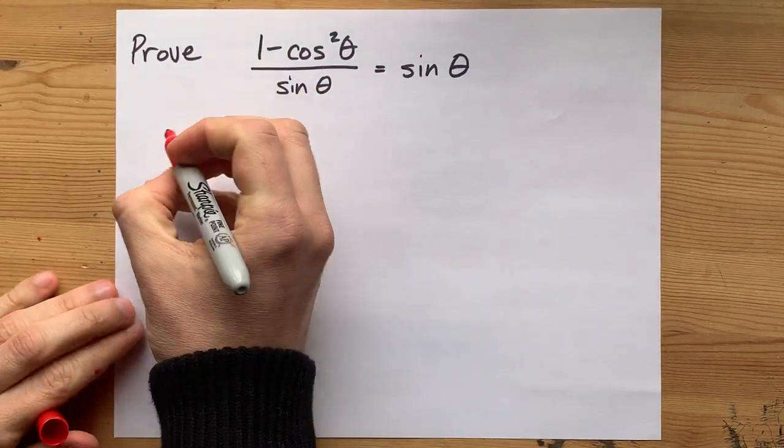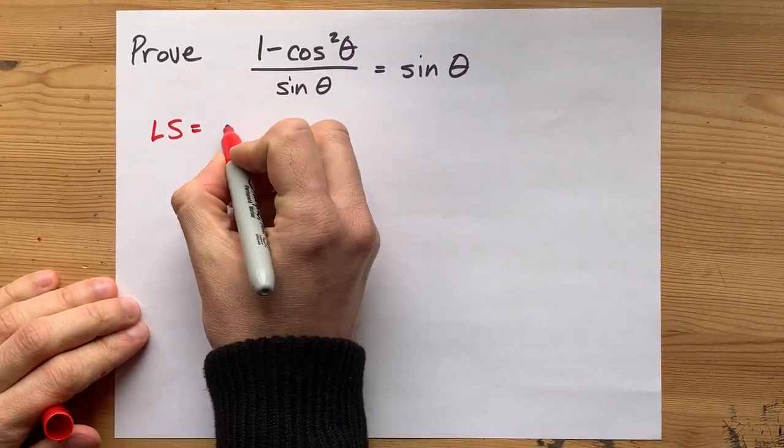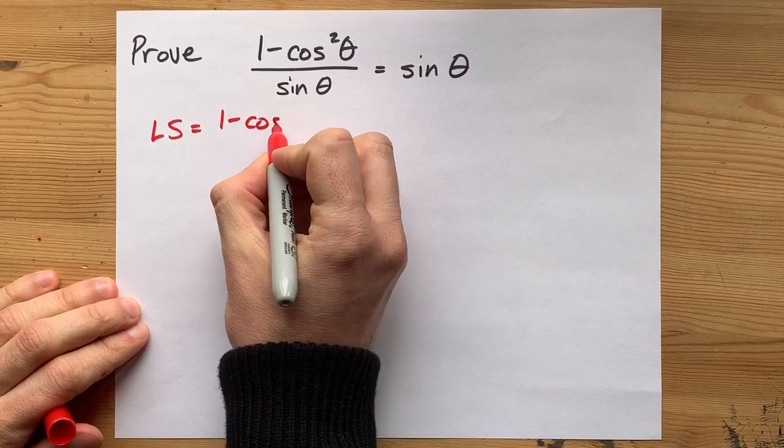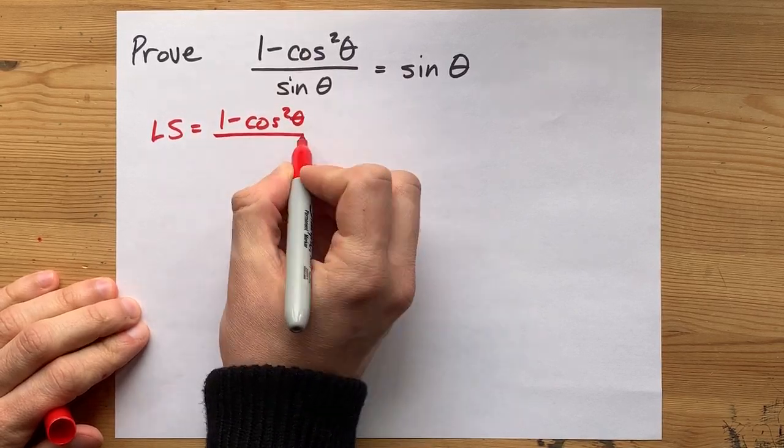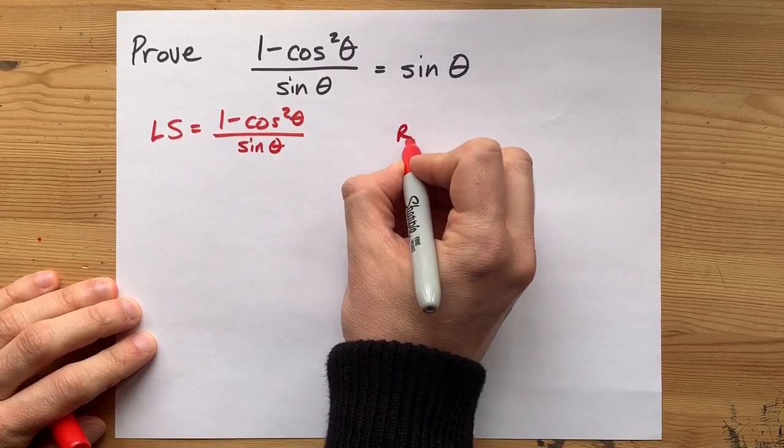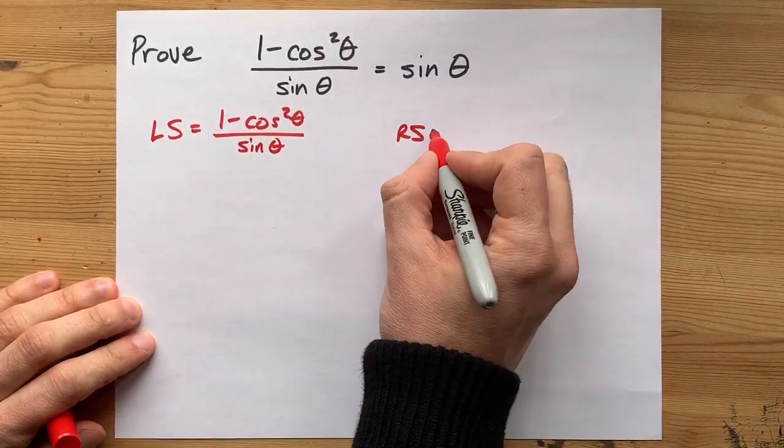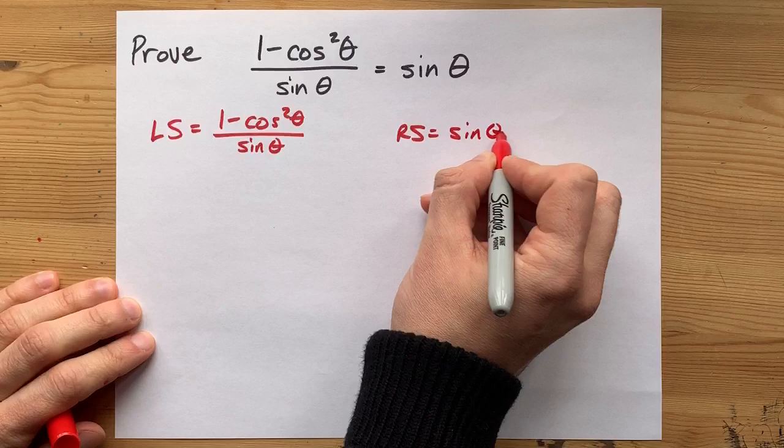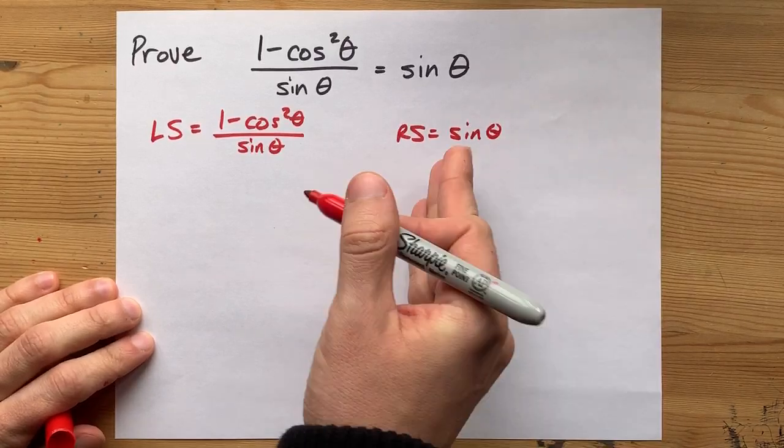Can you prove that 1 minus cos squared of an angle divided by the sine of that same angle is equal to the sine of the angle? Seems a little weird that we divide by something and get that same thing as our answer, but lo and behold,